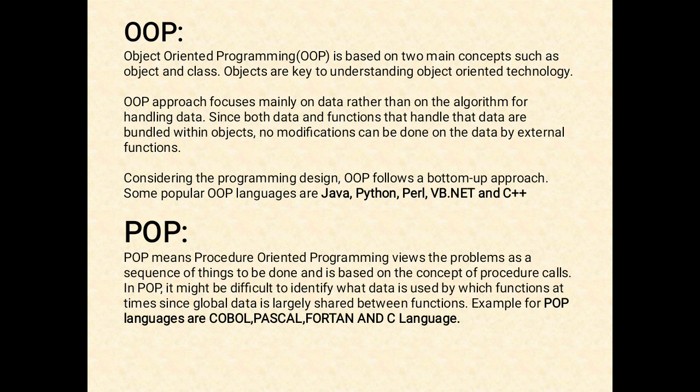Objects are key to understanding object-oriented technology. An object is anything that really exists in the world and can be distinguished from others. Everything that we see physically will come into this definition — examples include human beings, a book, a tree, and so on. Every object has properties and exhibits some behavior.